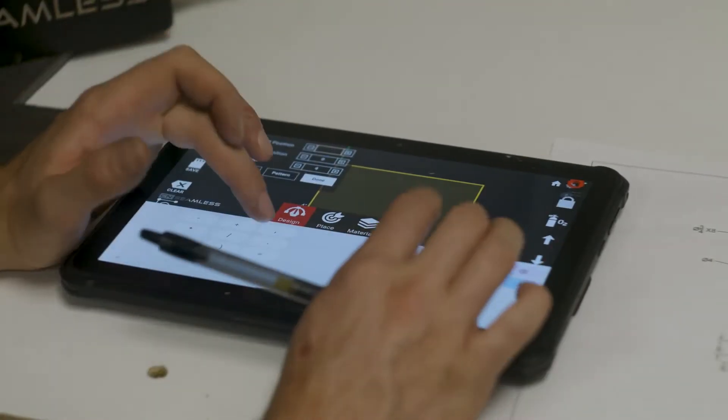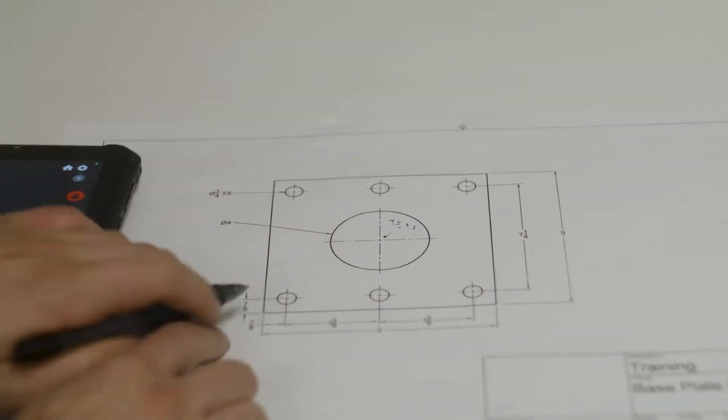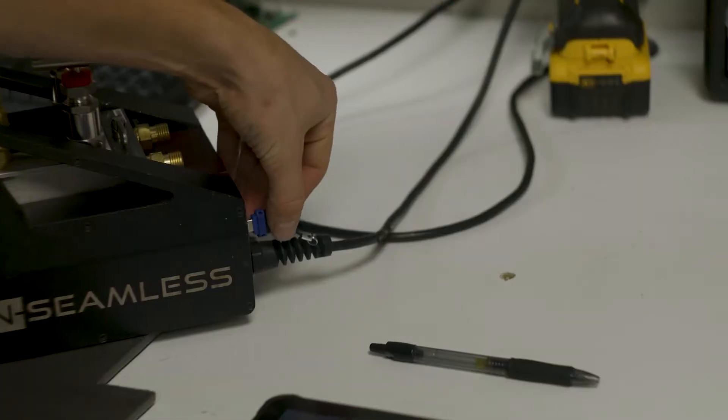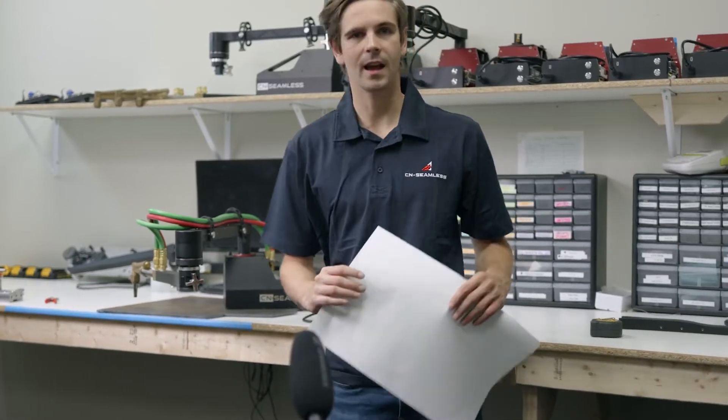And I'm going to show you how to do this in two ways. So the first way we're going to do it is designing it on the tablet, completely on there. You wouldn't even need this CAD file if you didn't have it. And then the second way I'm going to show you is if you have a CAD file, you can put it right on there. So let's get started designing it on the tablet.